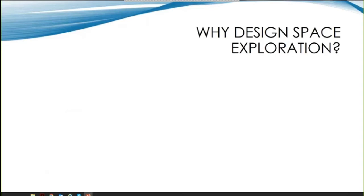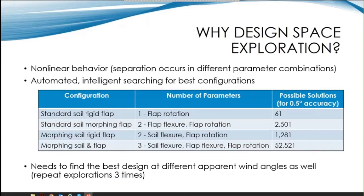Design exploration with HEEDS was used for two key reasons. First is the nonlinear behavior of sail performance. Flow separation occurs in different parameters and combinations that are not always intuitive. The second is that the testing process could be automated to search for improved geometry configurations. As the table shows, the number of possible solutions becomes quite large once the parameters varied go beyond one. This becomes even larger when testing for three different apparent wind directions. HEEDS can effectively search the design space in fewer evaluations to make finding the best solutions time efficient.